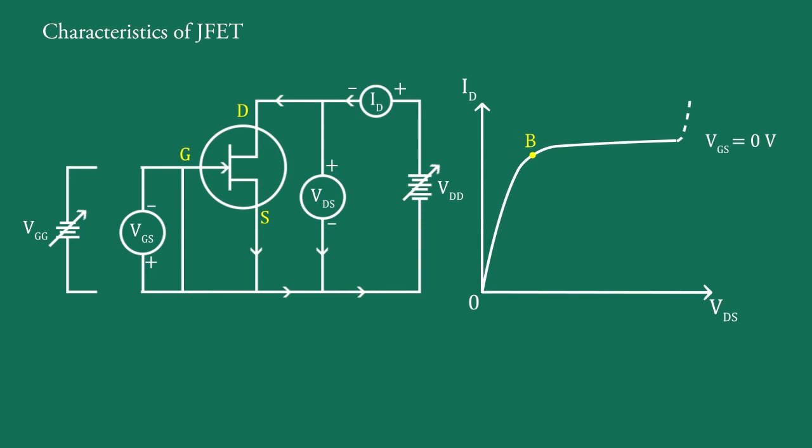The drain voltage corresponding to point B is called pinch-off voltage Vp. The drain current with source short-circuited to gate, that is VGS equal to 0V and drain voltage VDS equal to pinch-off voltage Vp, is called short-gate drain current IDSS or zero bias current.